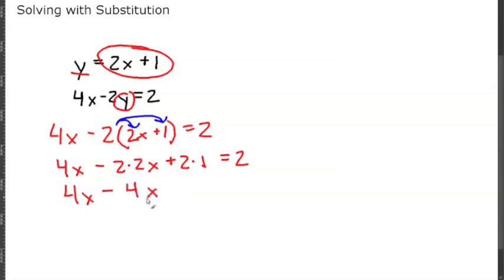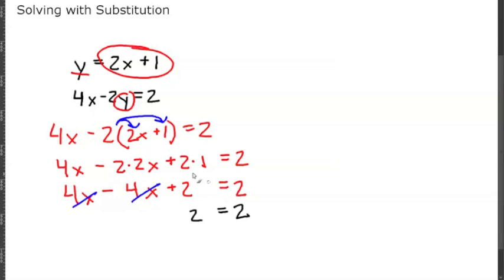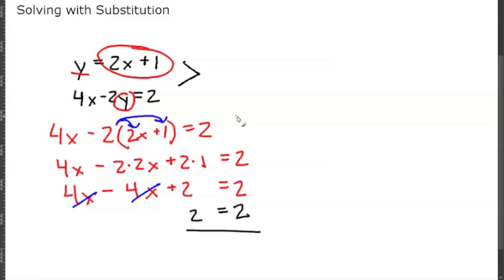Distributing gives us 4x minus 4x minus 2 equals 2. Simplifying, 4x minus 4x equals 0, so we're left with 2 equals 2. Since 2 equals 2 is always true, there are infinitely many solutions. Both equations represent the same exact line, so they intersect at infinitely many points.